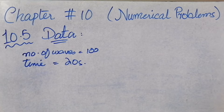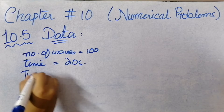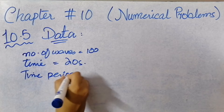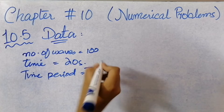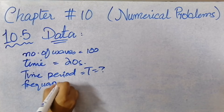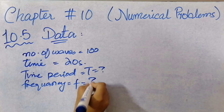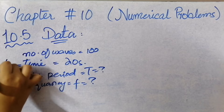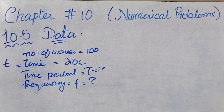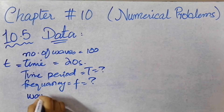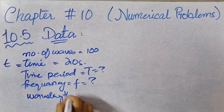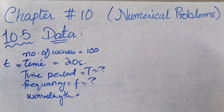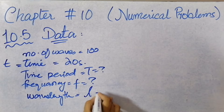What we need to find is frequency and time period of the wave. Time period is related to capital T. Now the last thing given is wavelength — wavelength is denoted by lambda, okay.